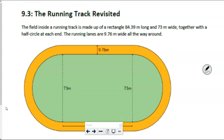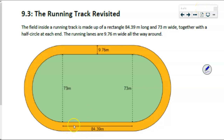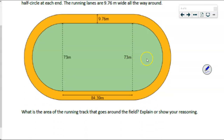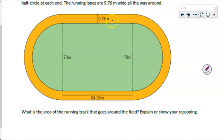Running the track revisited. This looks familiar, doesn't it? Before, we were finding the circumference and perimeters of different pieces. Now let's read through it. The field inside a running track is made up of a rectangle — 84.39 meters long and 73 meters wide — together with a half circle on each end. The running lanes are 9.76 meters wide all the way around. What is the area of the running track that goes around the field? I don't want the area of the grass inside — I want the area of this running track.